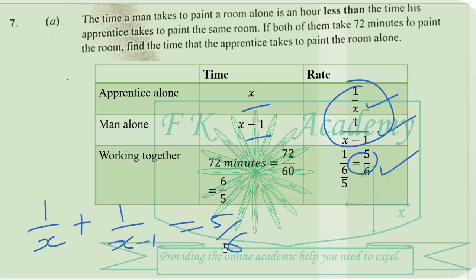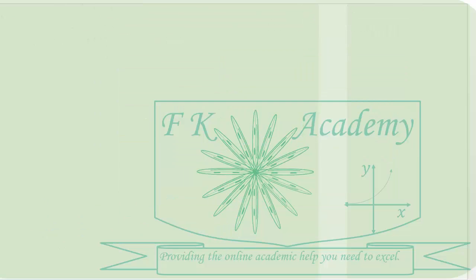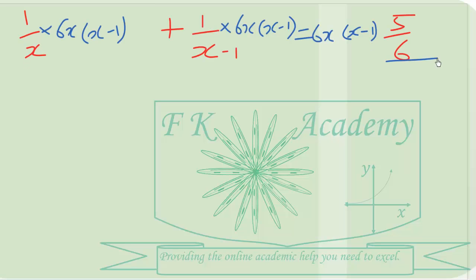We multiply through by the LCM which is 6x into bracket x minus 1. So now we can cancel. We have 5x outside. When we expand we get 5x squared minus 5x. Then again we can cancel. We are left with 6x. Then we are left with 6 into x which is 6x minus 6.